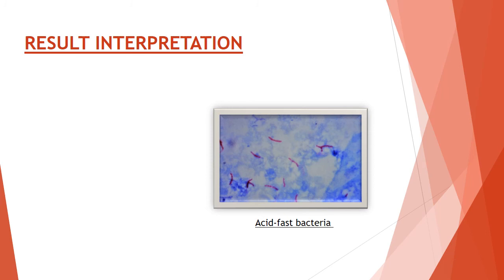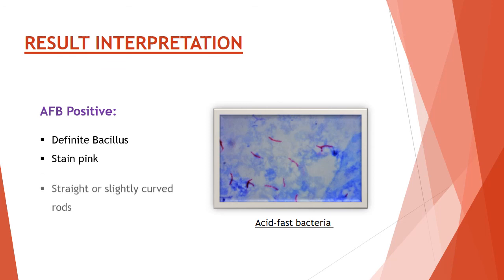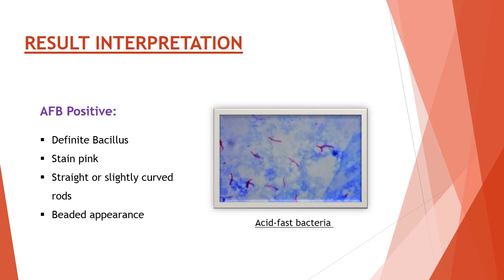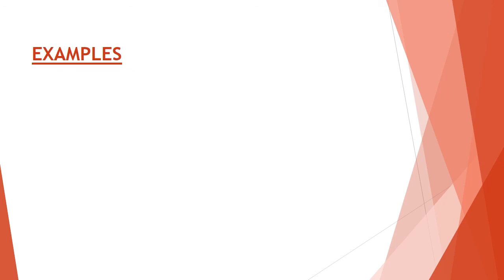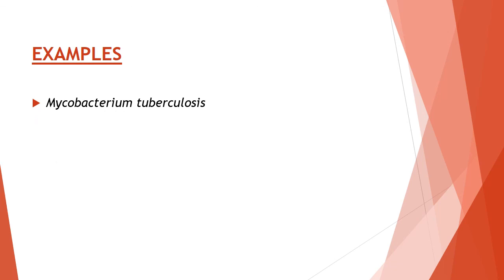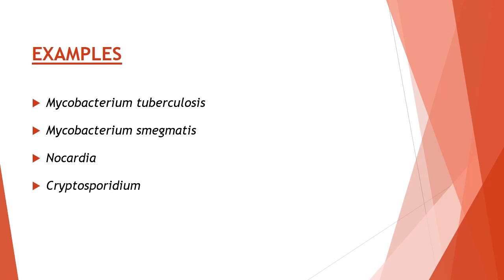Under oil immersion lens, acid-fast positive bacteria are definite bacilli, stained pink due to the carbolfuchsin basic dye, with straight or slightly curved walls, at times having a beaded appearance. The background appears blue due to methylene blue. Examples of acid-fast bacteria are Mycobacterium tuberculosis, Mycobacterium smegmatis, Nocardia, and Cryptosporidium.